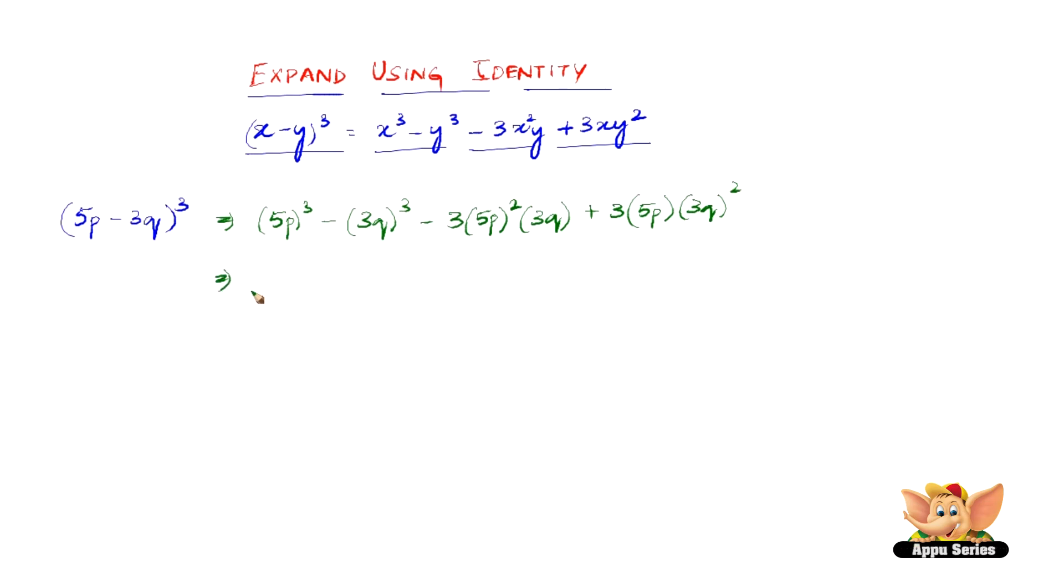Now, (5p)³ is 5 × 5 × 5 = 125, and p × p × p = p³.